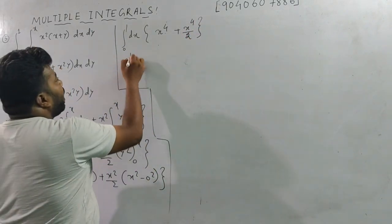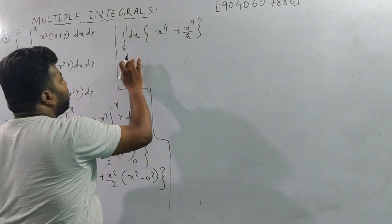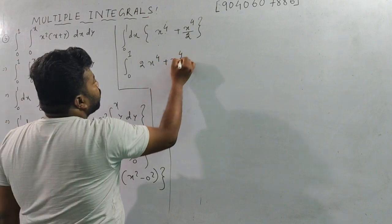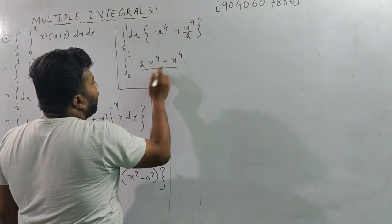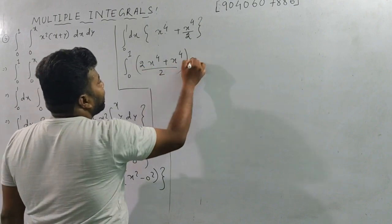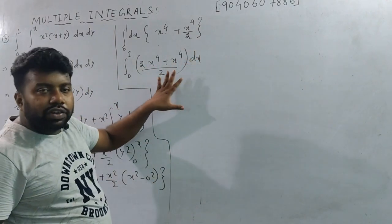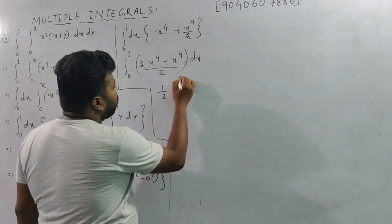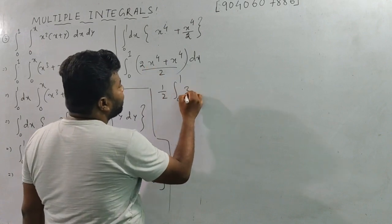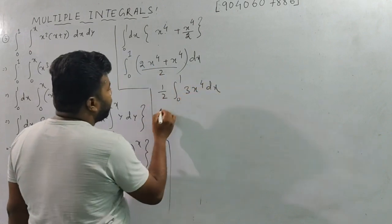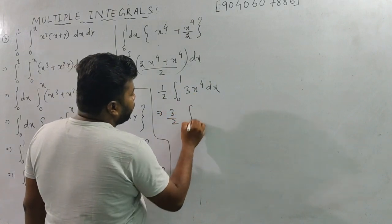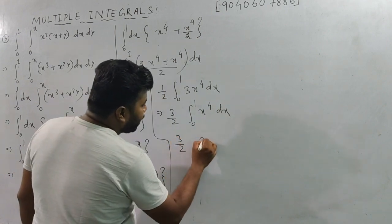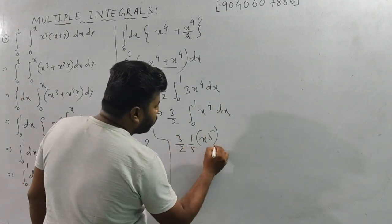Simplifying: from 0 to 1, we have 2x⁴ + x⁴/2, which gives 3x⁴/2. Continuing the integration.